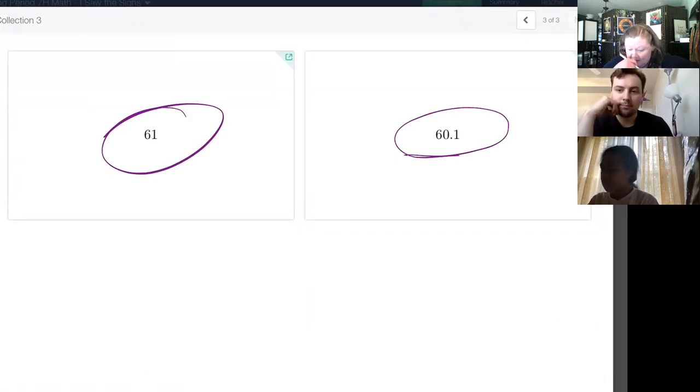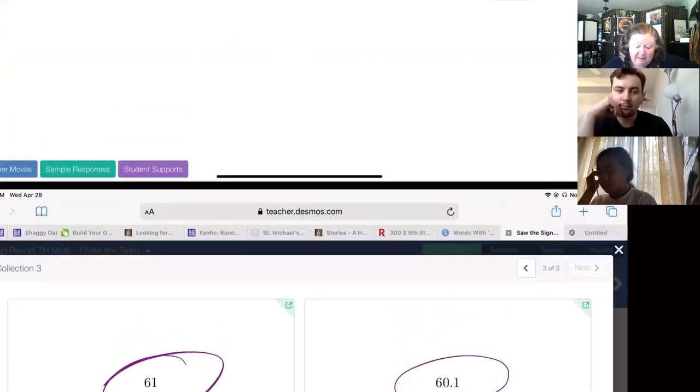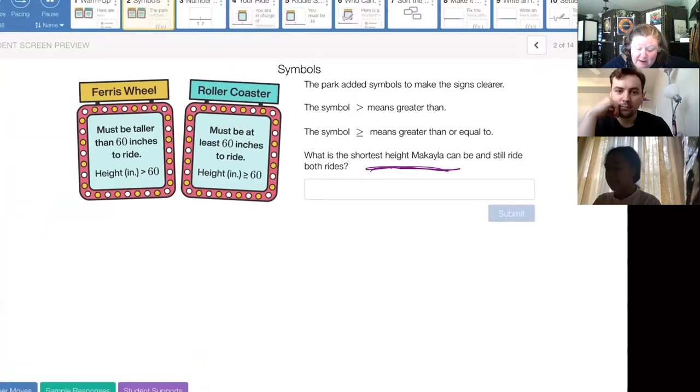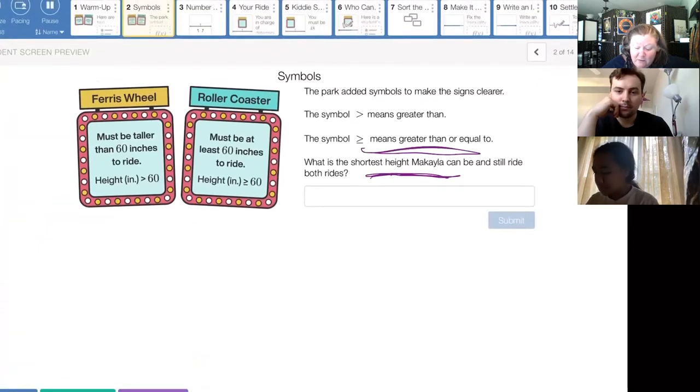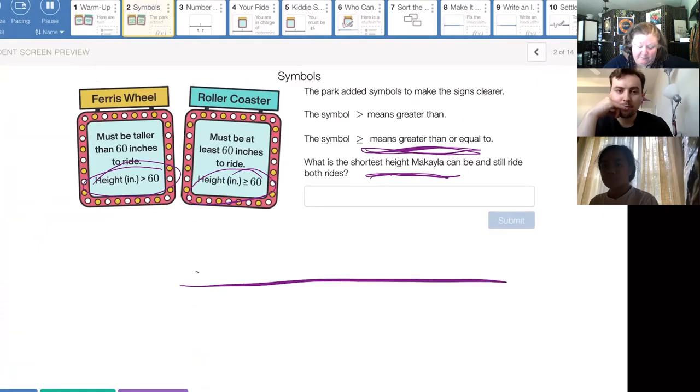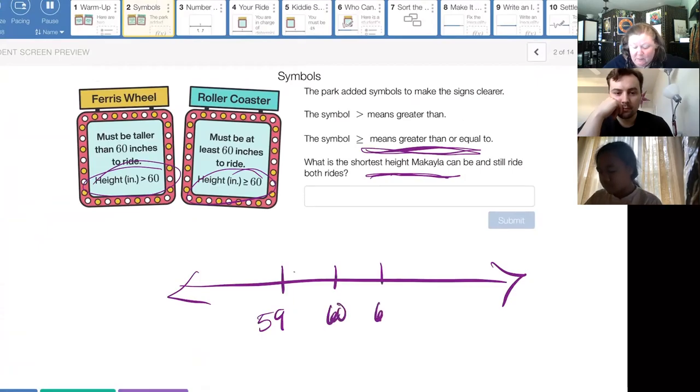And a few of you, I remember I took this screenshot from Prehensha, but she wasn't the only one, a few people who had done this, put 60.1. Because the directions here said that it has to be greater than or equal to for this one, and just greater than for this one. So as long as she's somewhere above 60, that it works.